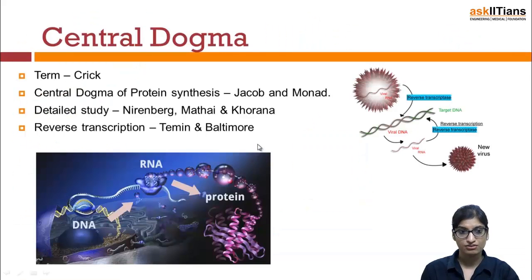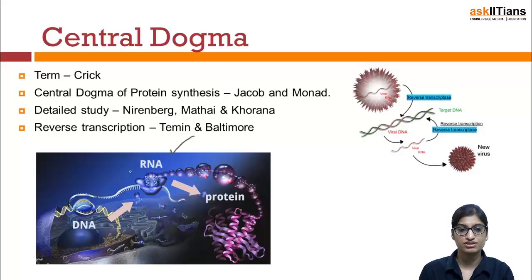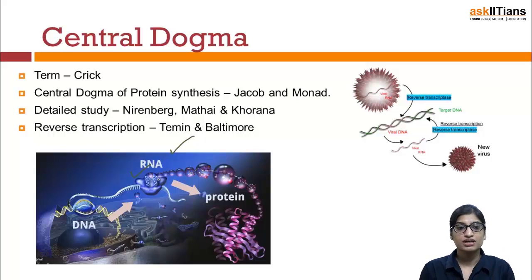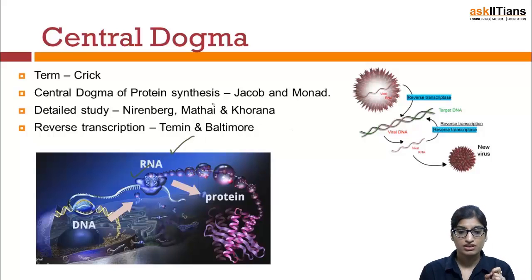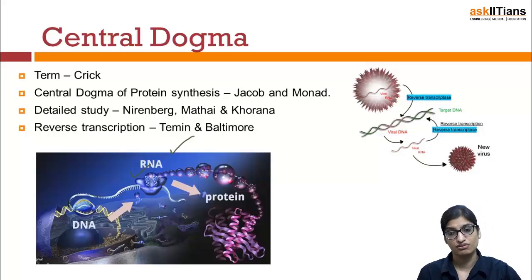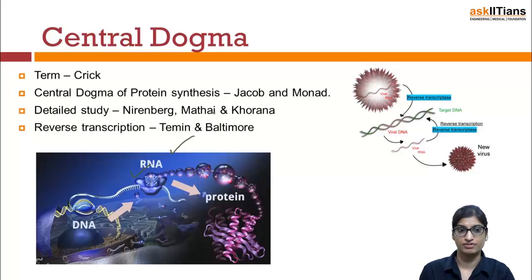Central dogma is explained in this picture. It indicates that DNA gives instruction for the production of RNA, and then RNA gives information for the production of protein — that is what central dogma is. Ultimately, protein has to be formed. Central dogma can be defined as the unidirectional flow of information for the production of protein. The term 'central dogma' was given by the scientist Crick.